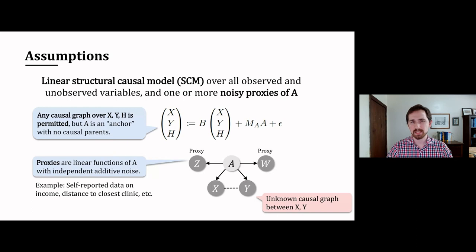We'll also assume access to proxy variables. When I say a proxy, I mean a variable that is a linear function of A with independent additive noise. You can think of this as noisy self-reported survey data that might be collected during training to improve the robustness of our models. But these variables will not be available at test time.